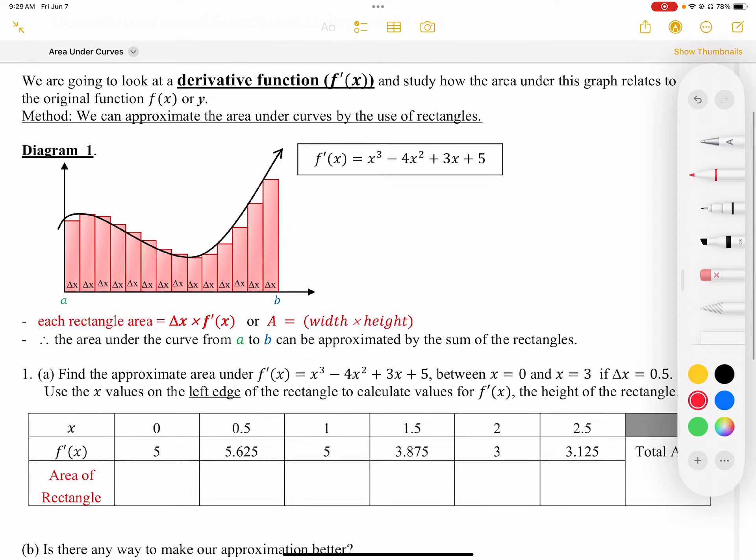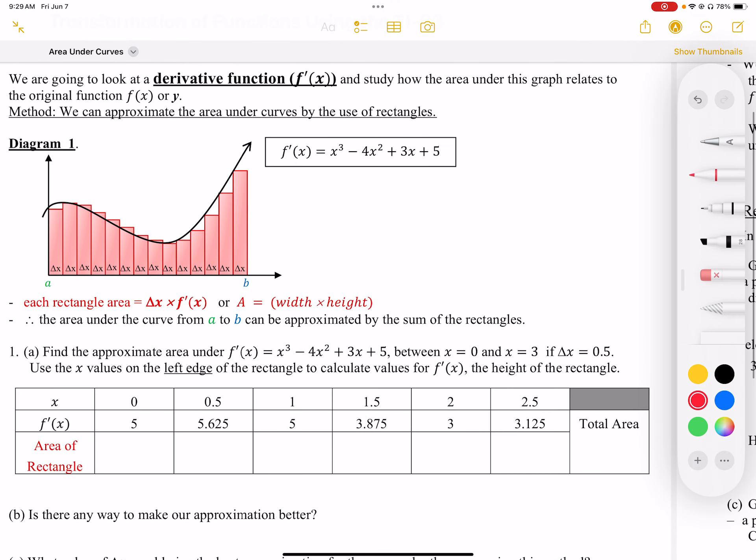Here I've given you the y-coordinates of that f'(x) graph, the cubic function x³ - 4x² + 3x + 5. We've been given x coordinates and the y-coordinates, or how high that graph is, and we're going to calculate the area of each rectangle.